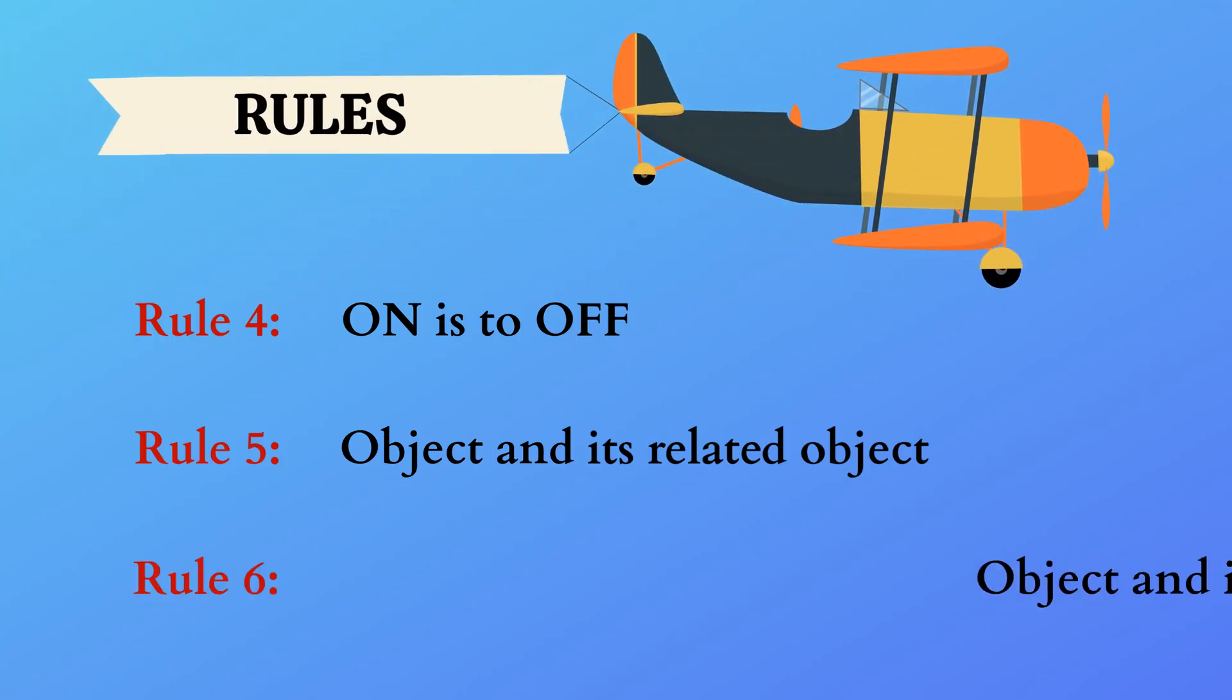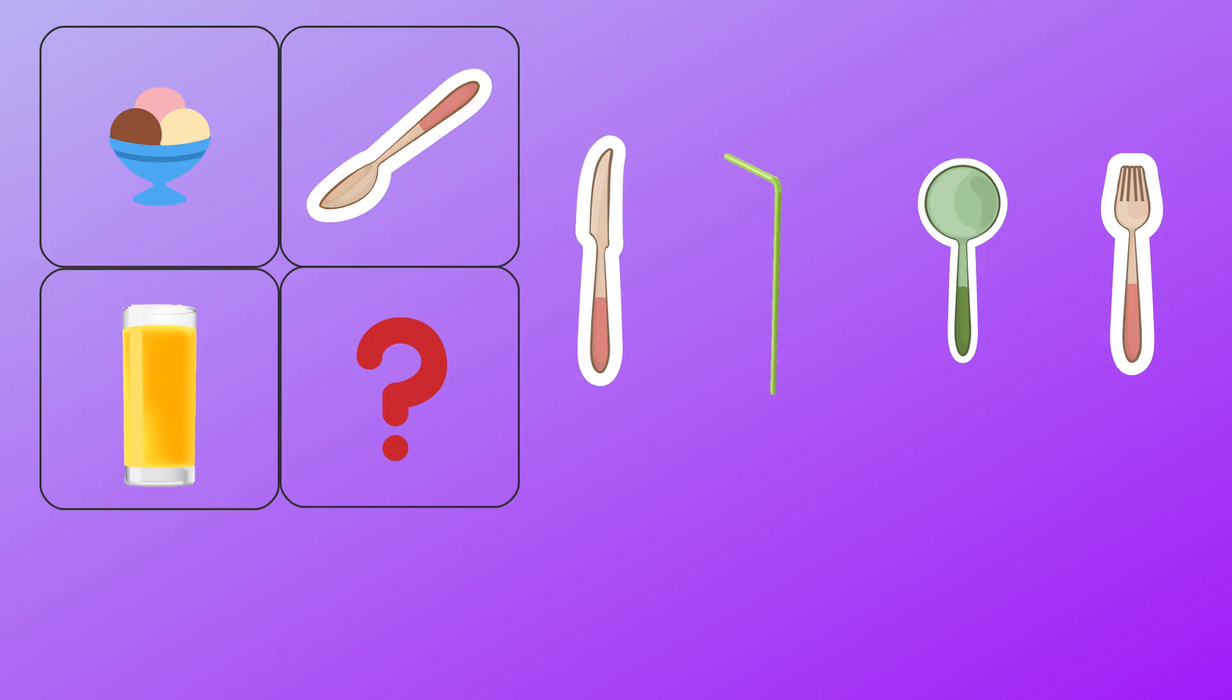Rule 6: Object and its function. The first picture is an ice cream. The second picture is a spoon. We use a spoon to eat an ice cream. So, it's an object and its function relationship.